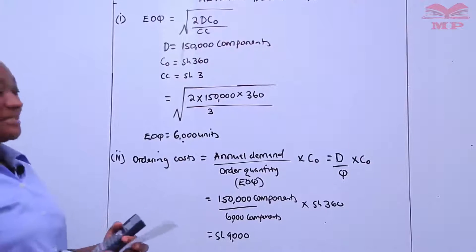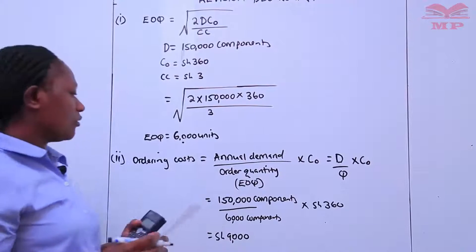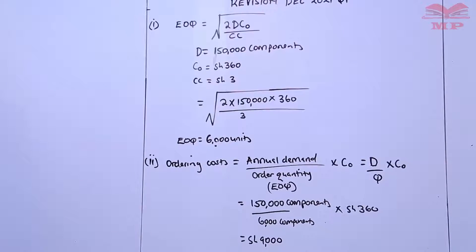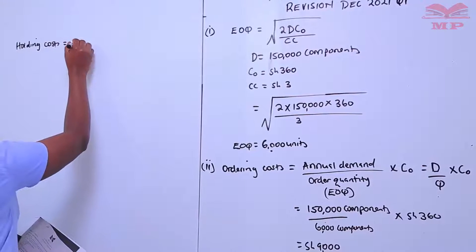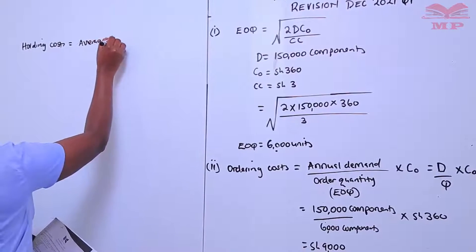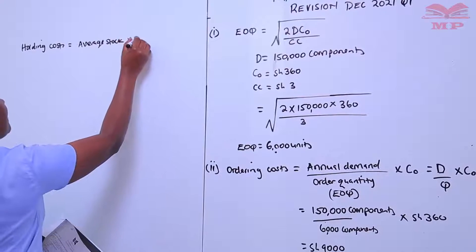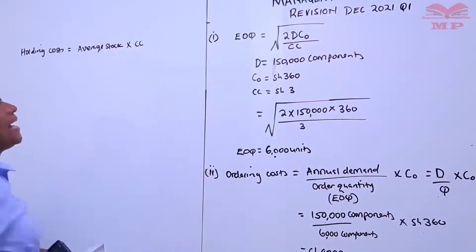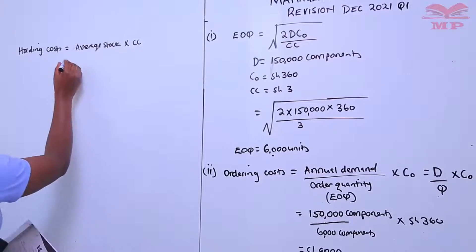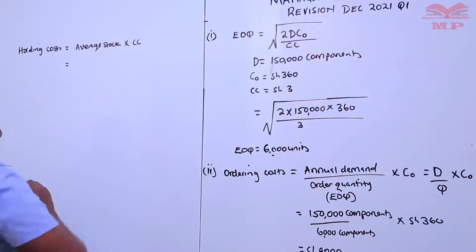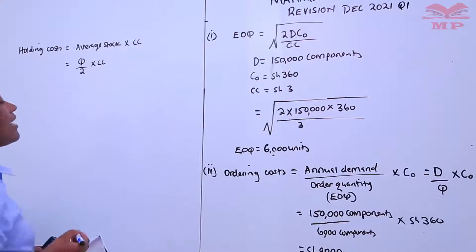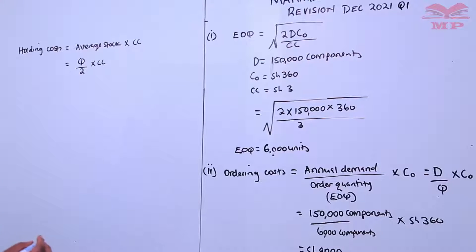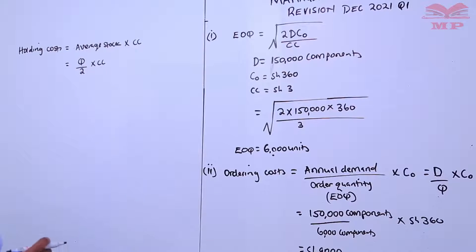We are also supposed to calculate holding or carrying costs. How do we calculate holding costs? Holding cost equals average stock multiplied by carrying cost per unit per annum. Mathematically, this is the same as Q over 2 multiplied by CC, where average stock is simply the EOQ or order quantity divided by 2, multiplied by the carrying cost per unit per annum.